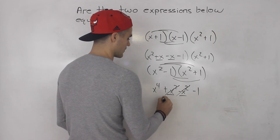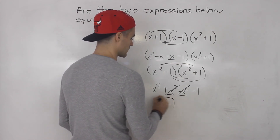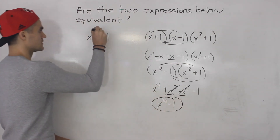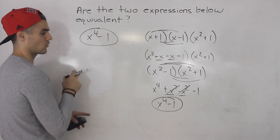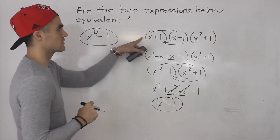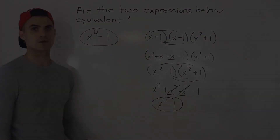So we're left with x to the power of 4 minus 1. Notice that we get the same thing for both, so both of these are equivalent expressions.